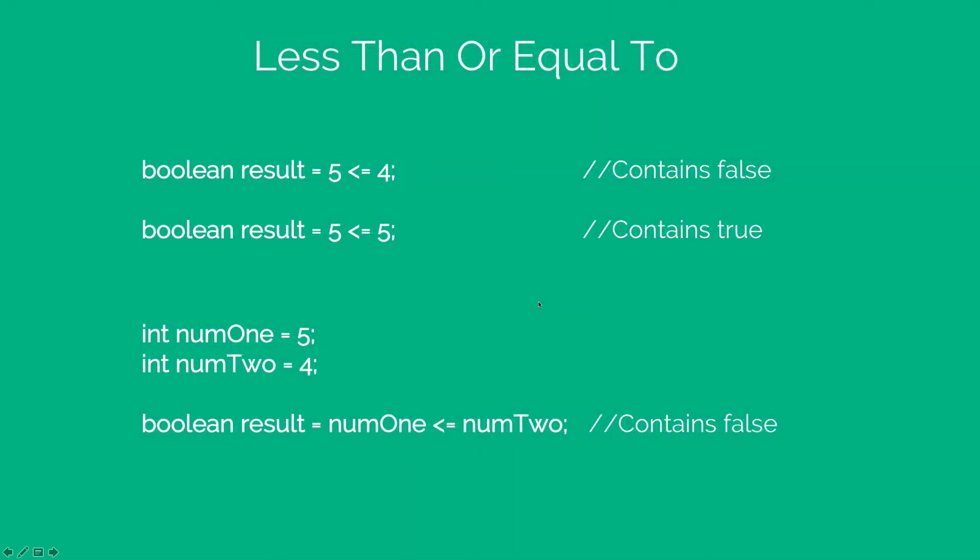The same way we have less than or equal to where we can say 5 less than equals to 4 which happens to be false. But 5 less than equals to 5 is good because there is an equal to sign as well, right?